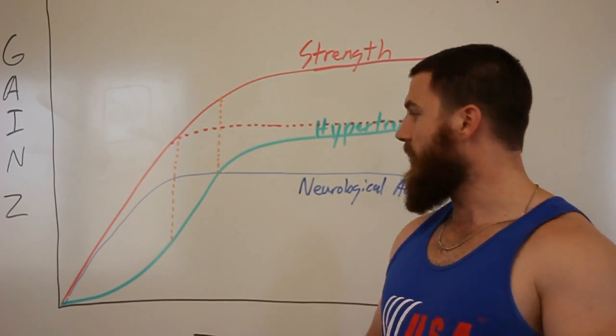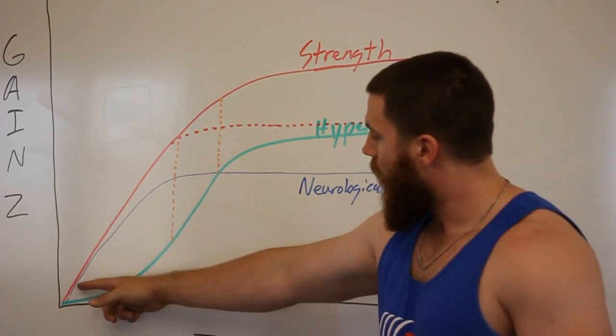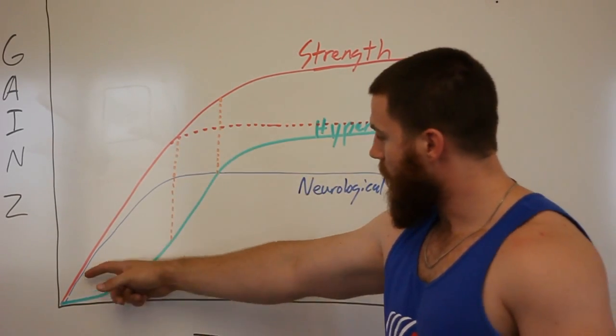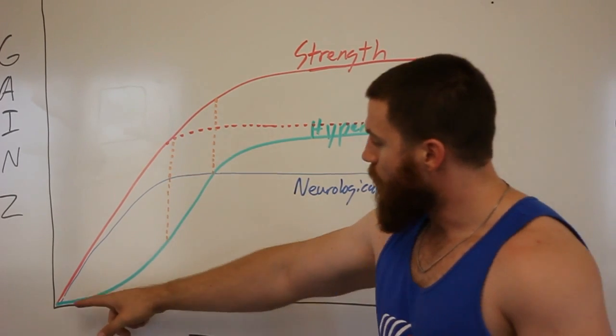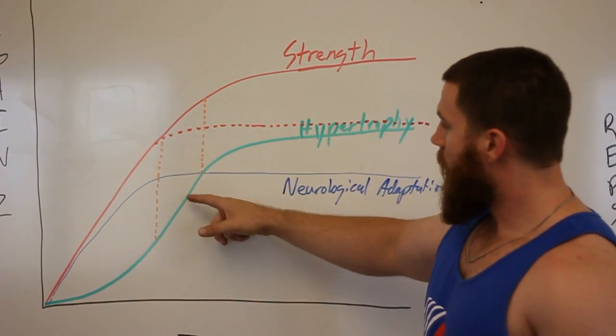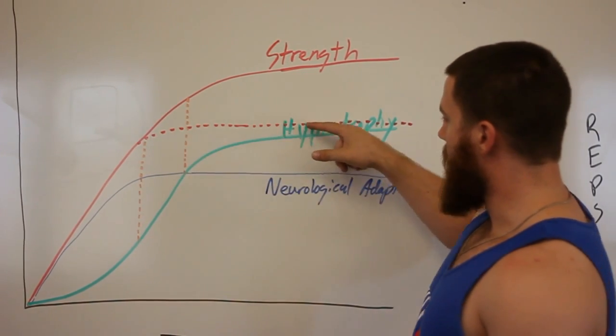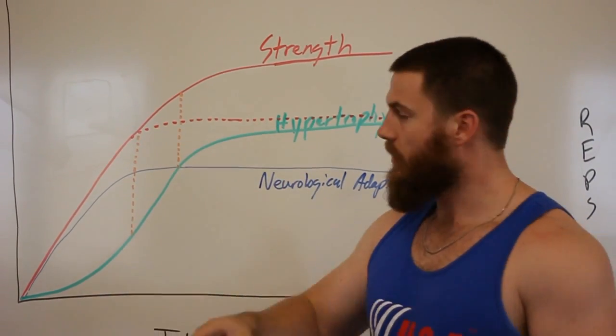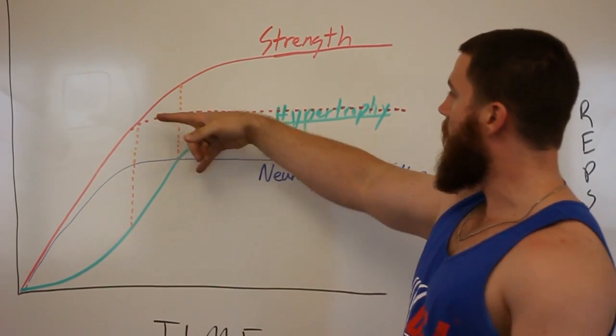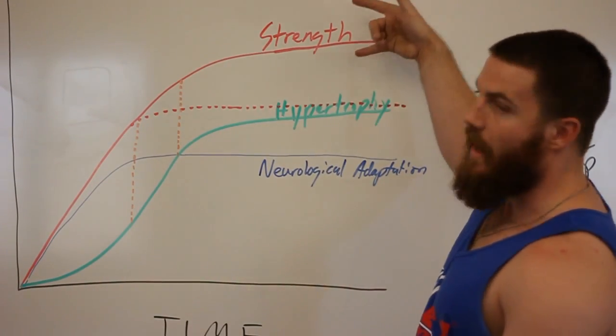The solution to this is hypertrophy. As you are gaining strength because of neurological adaptation, you need to be building bigger muscles. Because when neurological adaptation flat lines, your strength will flat line as well unless you have the hypertrophy coming up to keep your base of strength high.